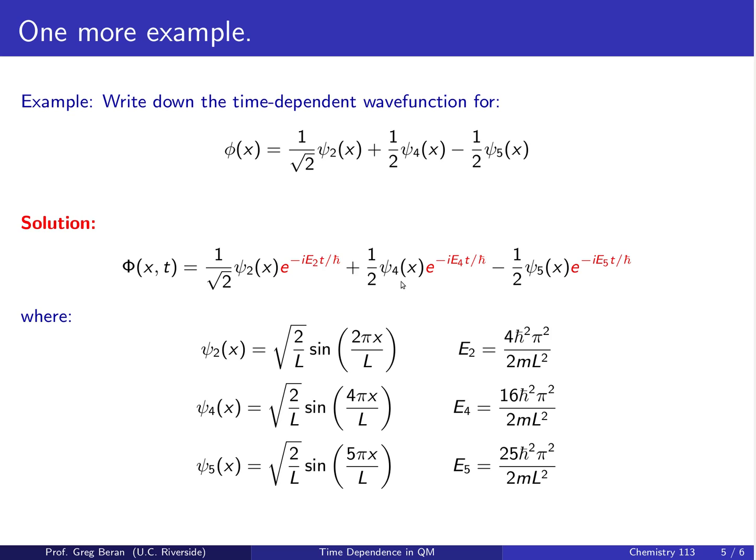The only difference is which energy goes in the exponent. For ψ₂, we put E₂. For ψ₄, we put E₄. For ψ₅, we put E₅. The energy corresponding to each one of those states as defined down here.